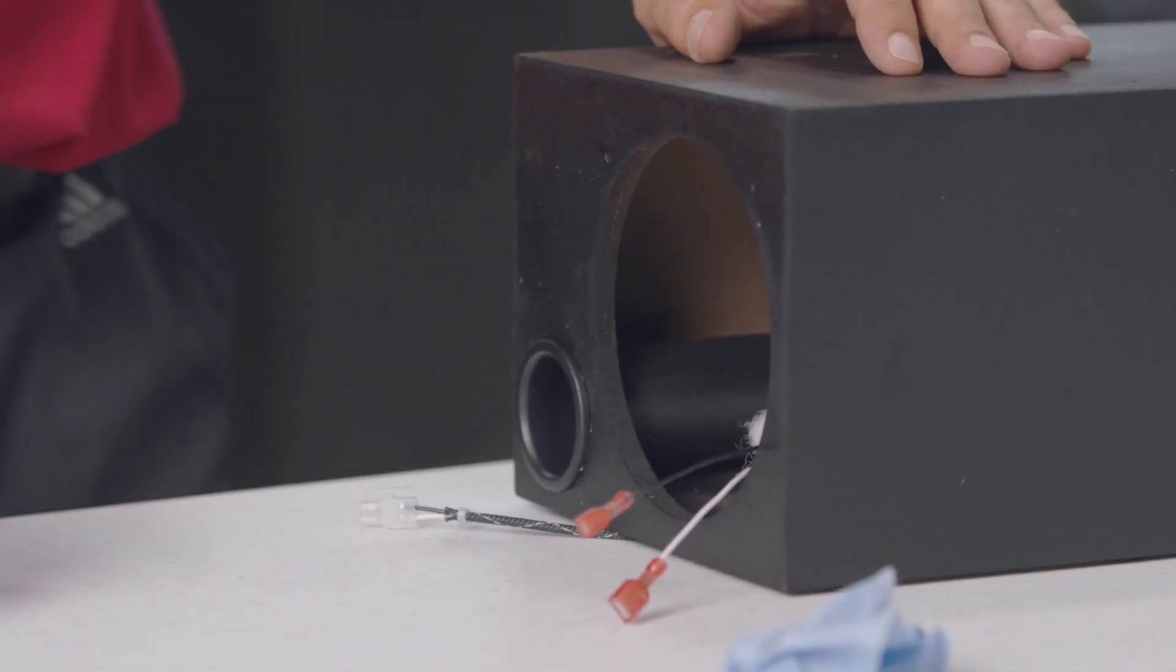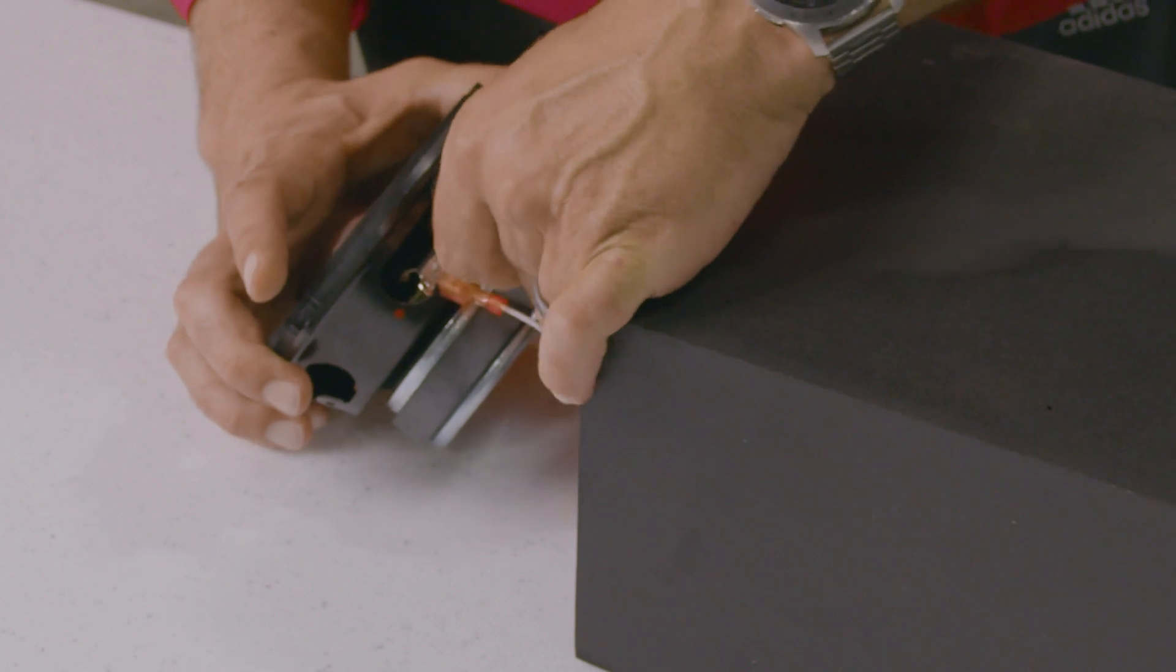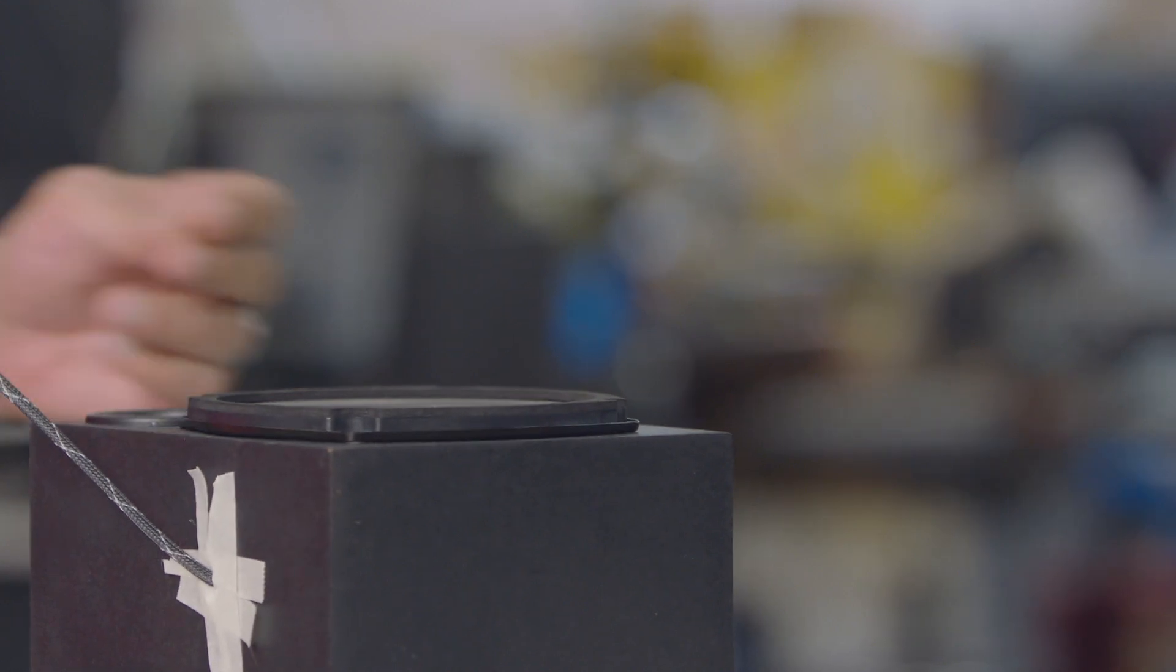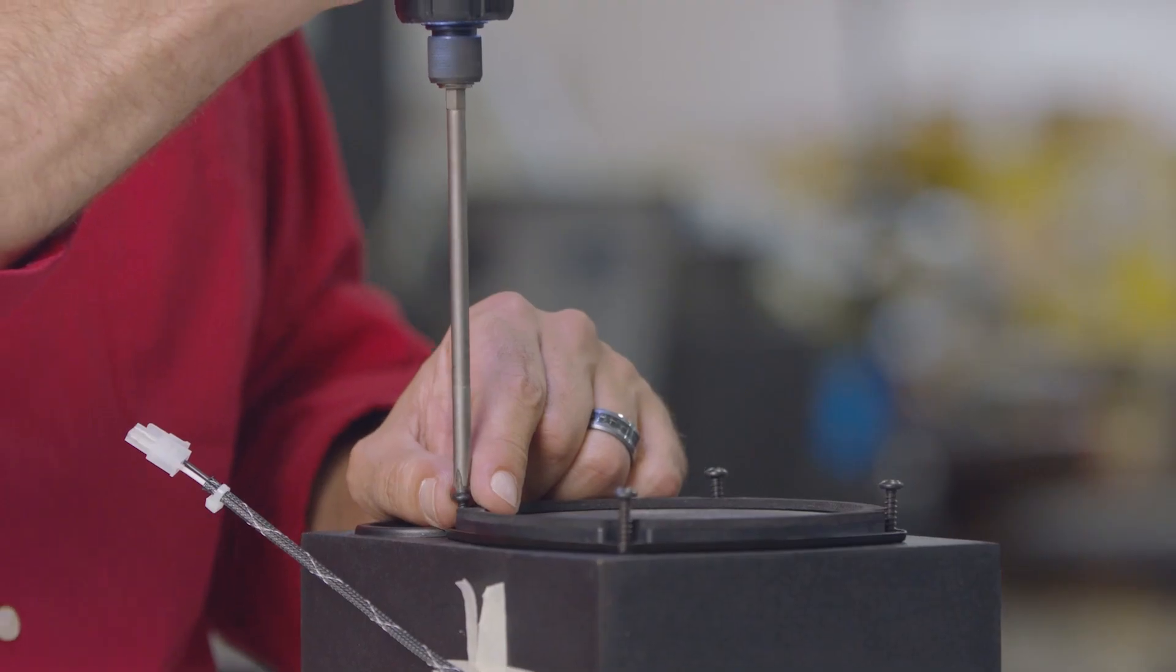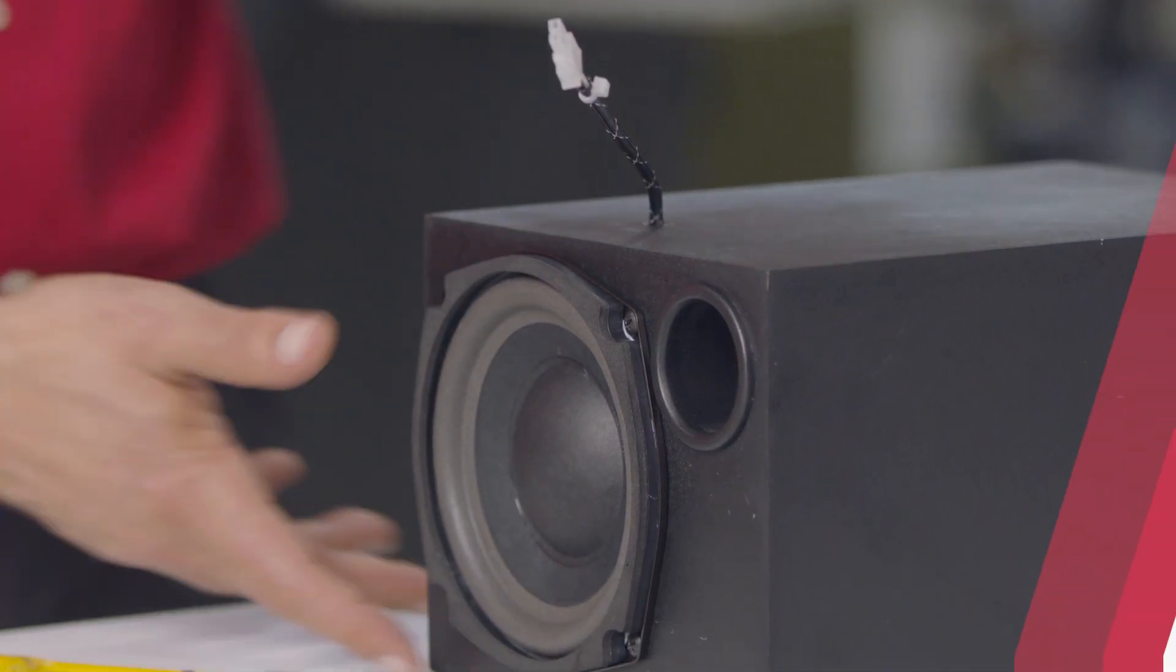Next we connect the wire harness to the woofer. We make sure that the polarity of the wires are correct. And now the woofer is ready to be screwed into the enclosure. And our subwoofer is completed and ready for final testing.